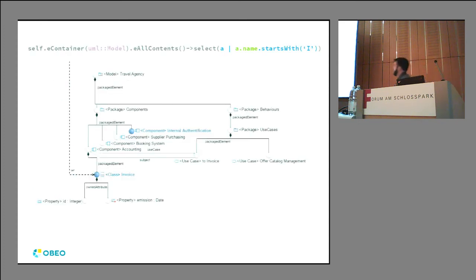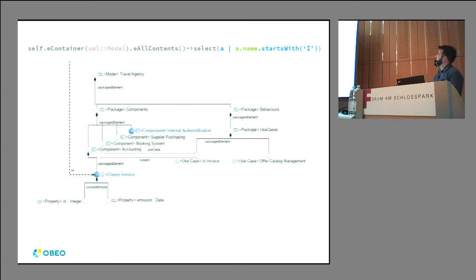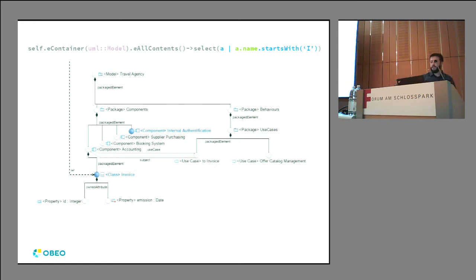Here's an example query. You can do things like eContainer to navigate up the model. For instance, if self is the class Invoice, you can go up to the UML model instance, then get all children with eAllContents and select those whose name starts with a given prefix. This single example is pretty short compared to the corresponding OCL, which would have required a lot more typing in the select branch.